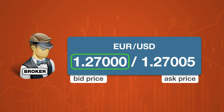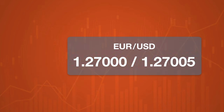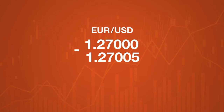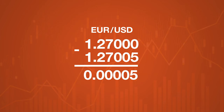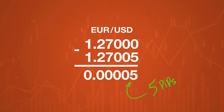sell you euros at 1.27005, and the difference between the buy and sell price will be 5 pips, 0.00005.